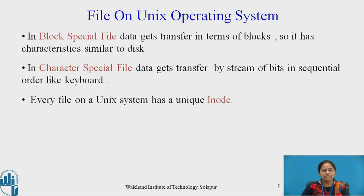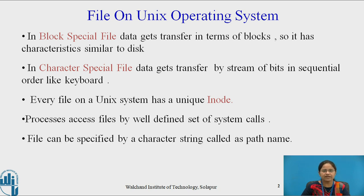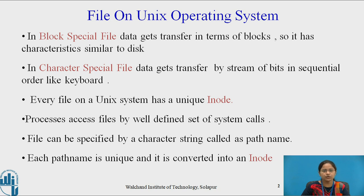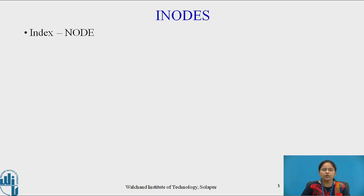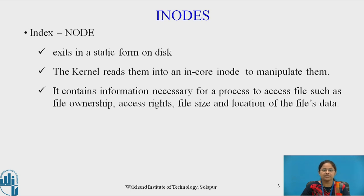Every file on the Unix operating system has a unique inode. Processes access files by a well-defined set of system calls. A file can be specified by a character string called a path name. Each path name is unique and it is converted into an inode. An inode is nothing but an index node. It exists in a static form on disk. The kernel reads them into an in-core inode to manipulate them. Basically, an inode contains information necessary for a process to access a file, such as file ownership, access rights, file size, and location of the file's data.